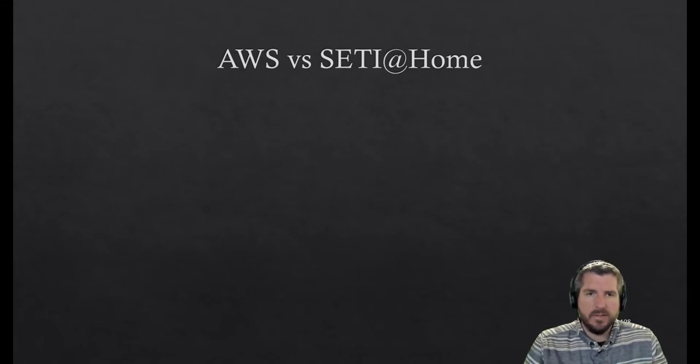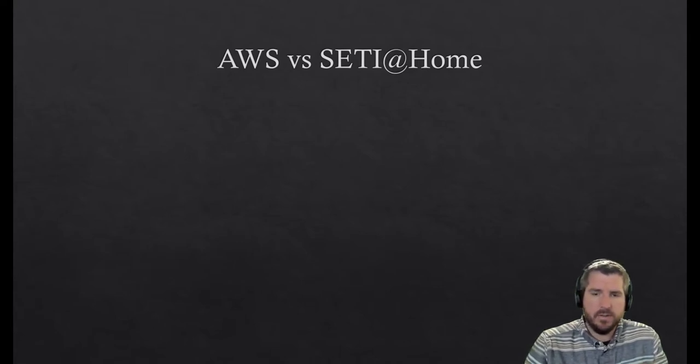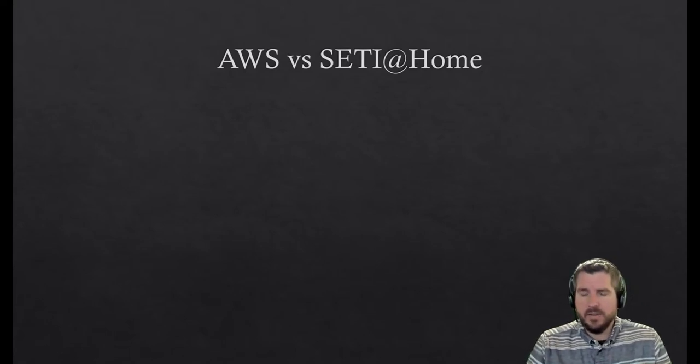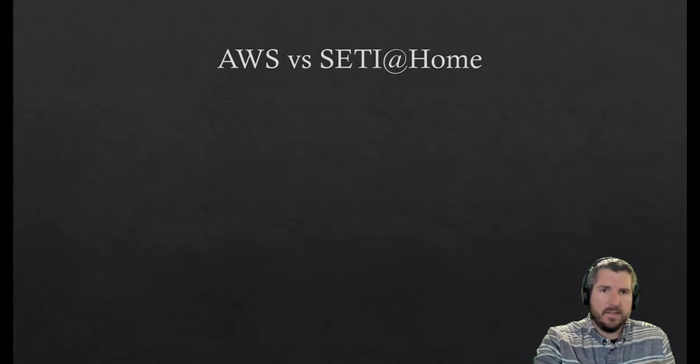You just explored AWS and you also explored the SETI at Home project. While they're very different, they both are a form of high performance computing. SETI at Home was your personal computer you can lend to analyze extraterrestrial signals. And AWS, you could see that the NFL was using that and it's more of a centralized computer bank.